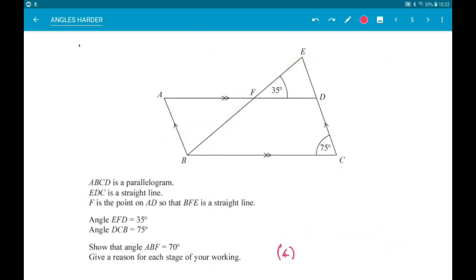Okay, next up ABCD is a parallelogram. EDC is a straight line. F is the point on AD so that ABFE is a straight line. We're given a couple angles. Our job is to show that angle ABF is 70 degrees, giving a reason for each stage of our working.